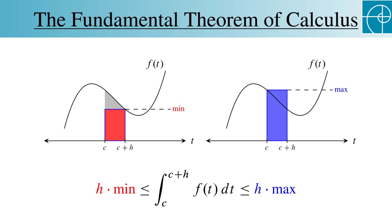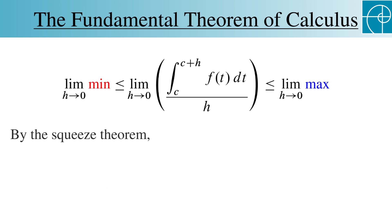Taking our previous inequality, dividing everything by h, and then taking the limit as h goes to zero gives us this. By the squeeze theorem, the limit of the middle term is f of c, and the middle term is the definition of capital F prime of c.